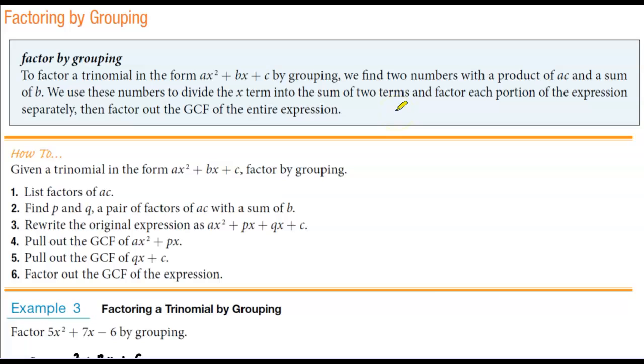We use these numbers to divide the x term into the sum of two terms and factor each portion of the expression separately, then factor out the greatest common factor of the entire expression.